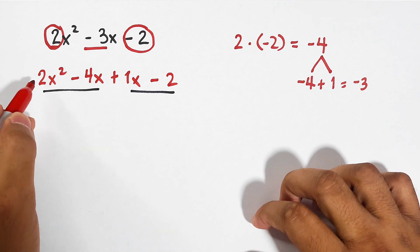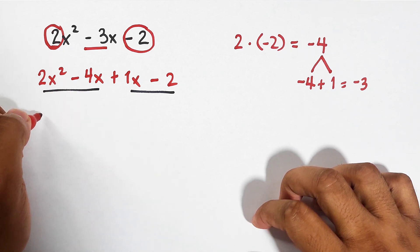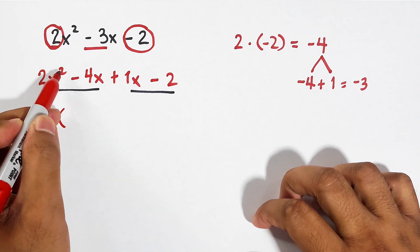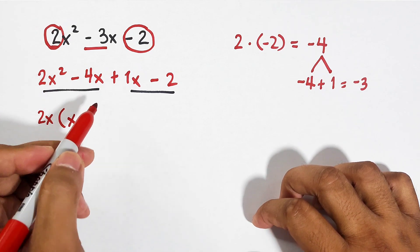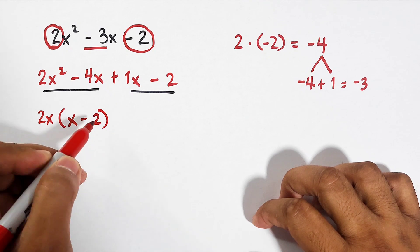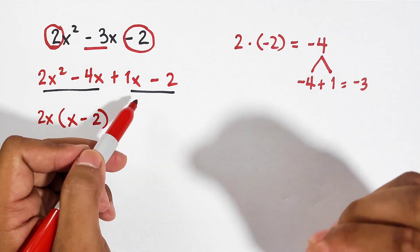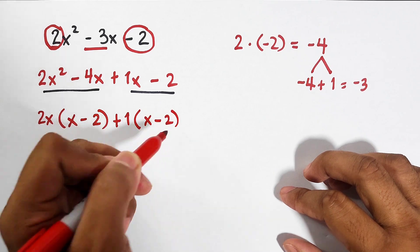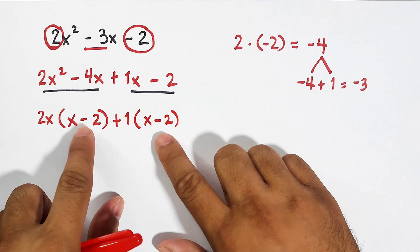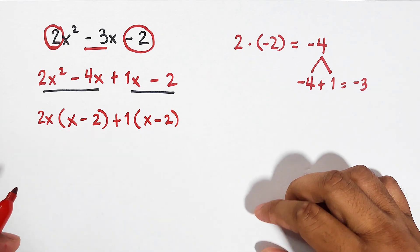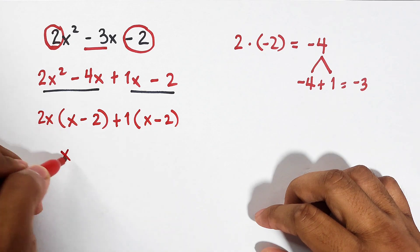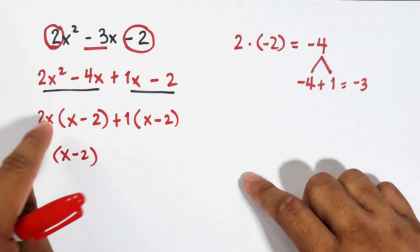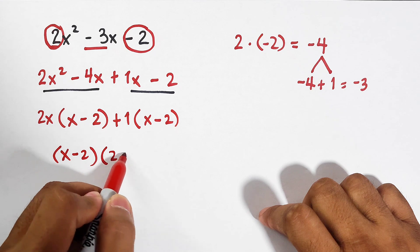For the first group, 2x squared minus 4x, the GCF is 2x. So 2x squared divided by 2x is x, and negative 4x divided by 2x is negative 2. For the second group, since they don't have a GCF, we put plus 1, times x minus 2. We now have the same binomial in both groups. We pull out the common binomial x minus 2, and the remaining factors are 2x and plus 1, giving us 2x plus 1. These are the factors of the given trinomial.